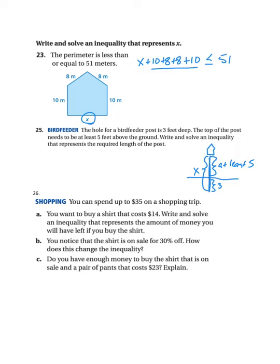So I can think of this as we need to be at least five feet above the ground. So that's greater than or equal to five, whatever this distance is right here. This distance needs to be greater than or equal to five. So that's going to be whatever X is minus three is greater than or equal to five. So that's writing it. Now you go ahead and solve it to figure out how long that post must be.